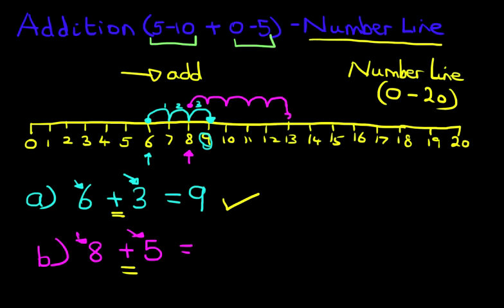And we'll take this right down here. 1, 2, 3, 4, 5 jumps. What number did we land on? We landed on number 13. And that is correct.